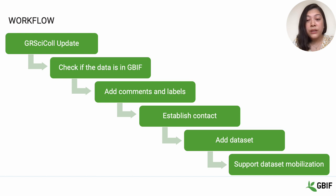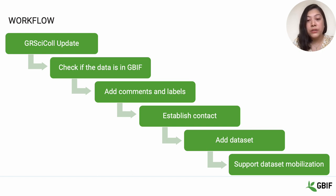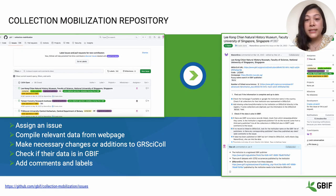The workflow starts with updating the GRSciColl institution and their collections, also noting whether their data is in GBIF or not. We then add relevant labels and comments, and finally we contact the institutions and offer support for their dataset publishing. All GRSciColl institutions within Asia and Africa are listed as issues in the collection mobilization repository maintained by GBIF in GitHub.